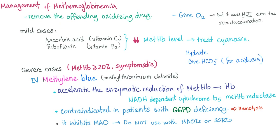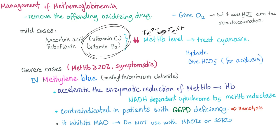How to manage this disease? Remove the offending oxidizing drug. If the patient is taking dapsone, stop it first. For mild cases, give vitamin C or vitamin B2 (riboflavin). These vitamins decrease methemoglobin level and treat cyanosis. The problem with methemoglobin is Fe2 converting to Fe3 — that's oxidation — so antioxidants can help treat it.